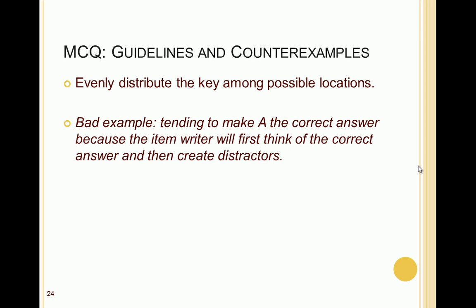The next guideline is to evenly distribute the key among possible answer locations. When writing an item, you tend to think of the correct answer first and fill it in under A. Over time, items may have A as the correct answer too often. There's also the urban legend of always choosing C. When writing items, it's good to specifically rotate the key — for example, item 1 has answer A, item 2 has answer B, item 3 has C, item 4 has D, then cycle again.